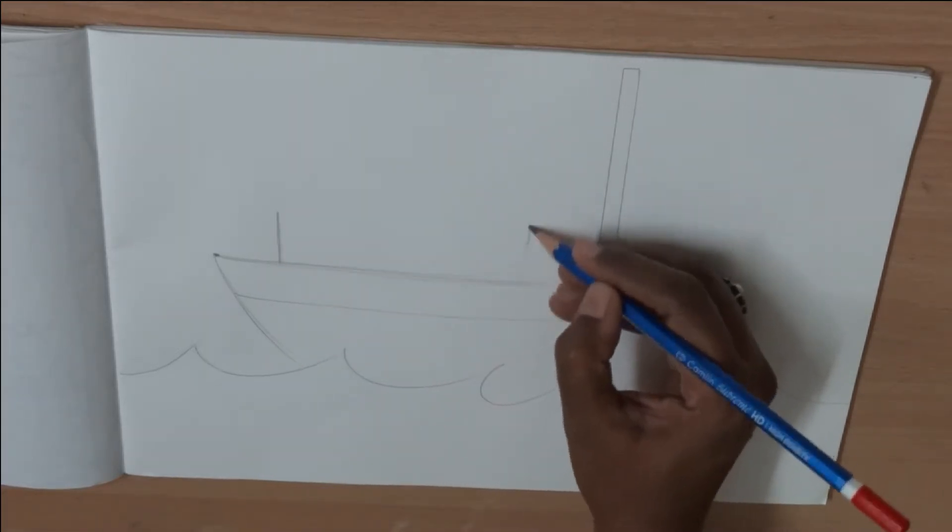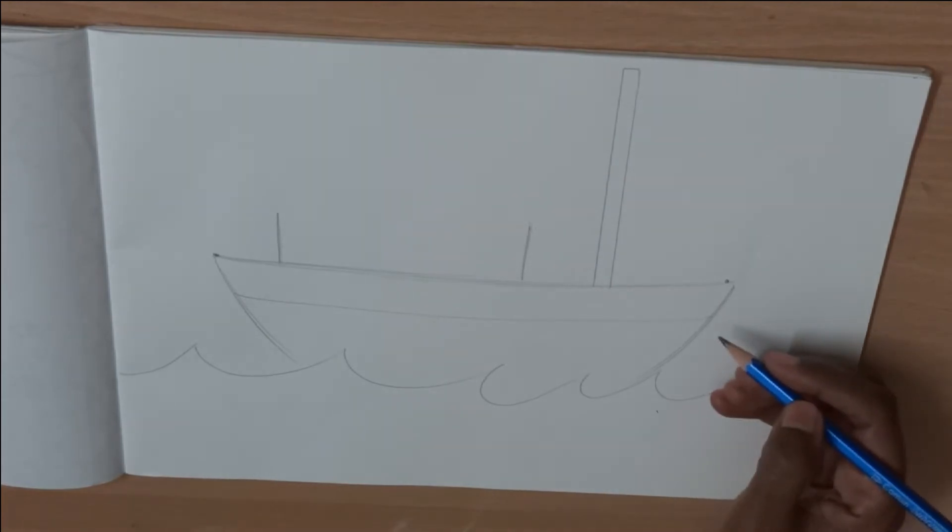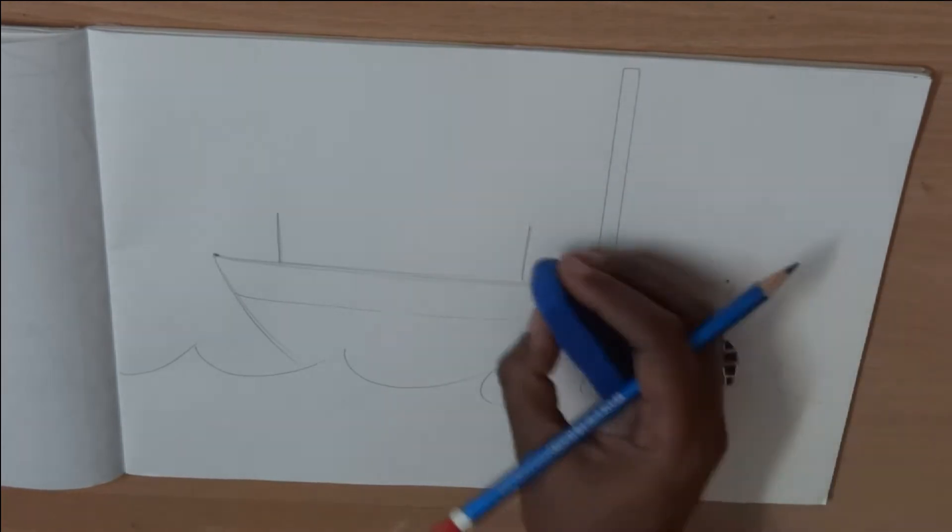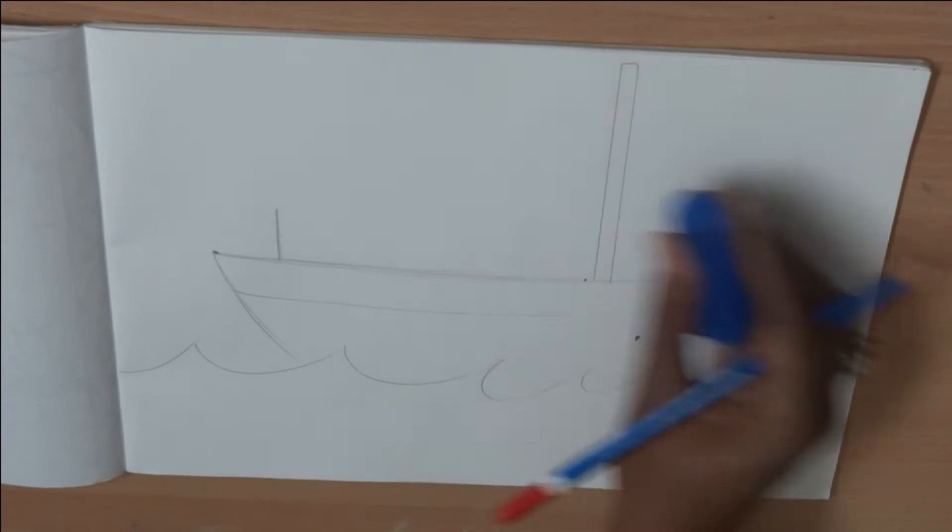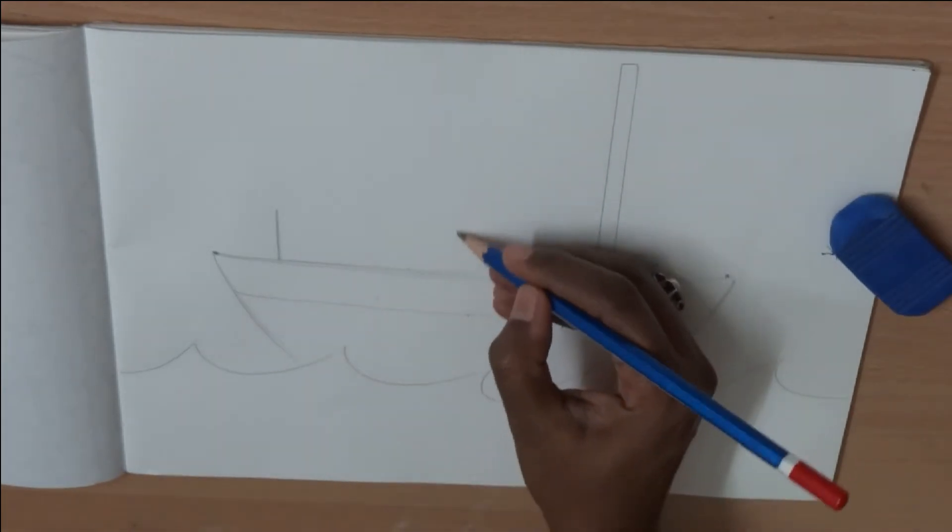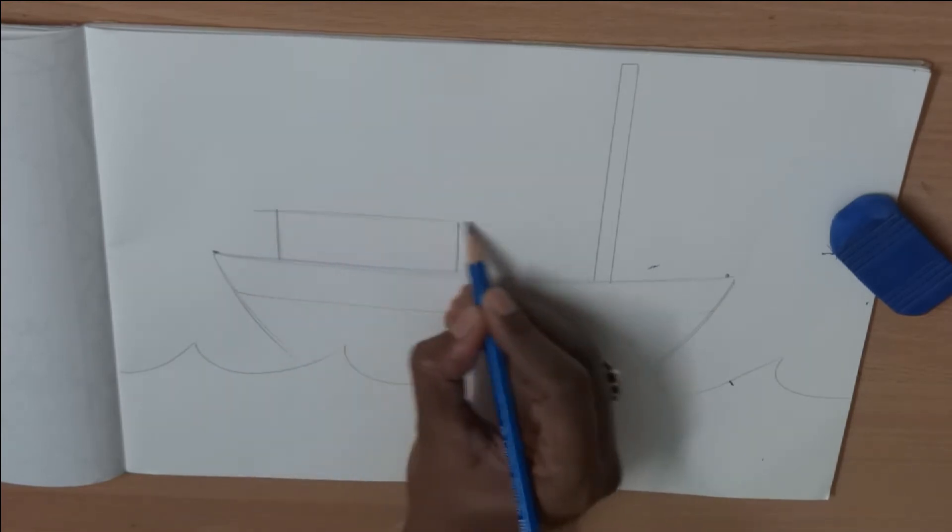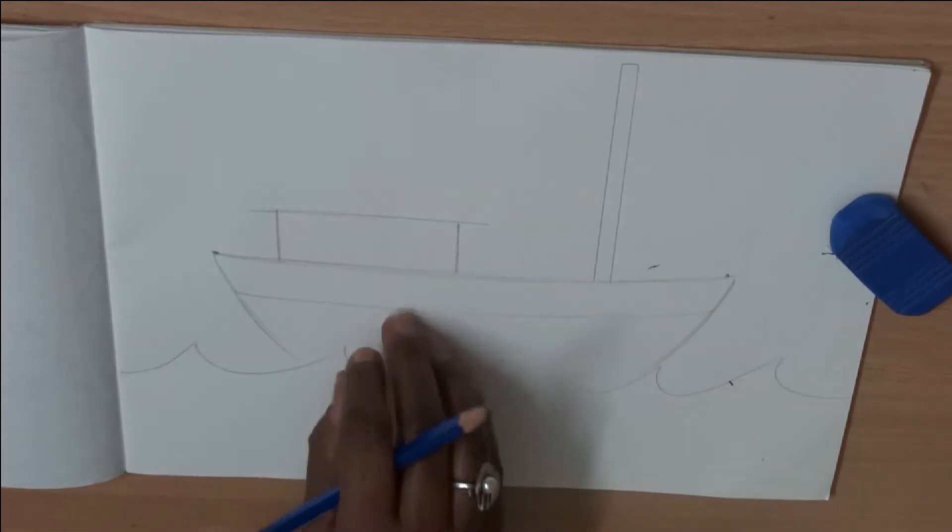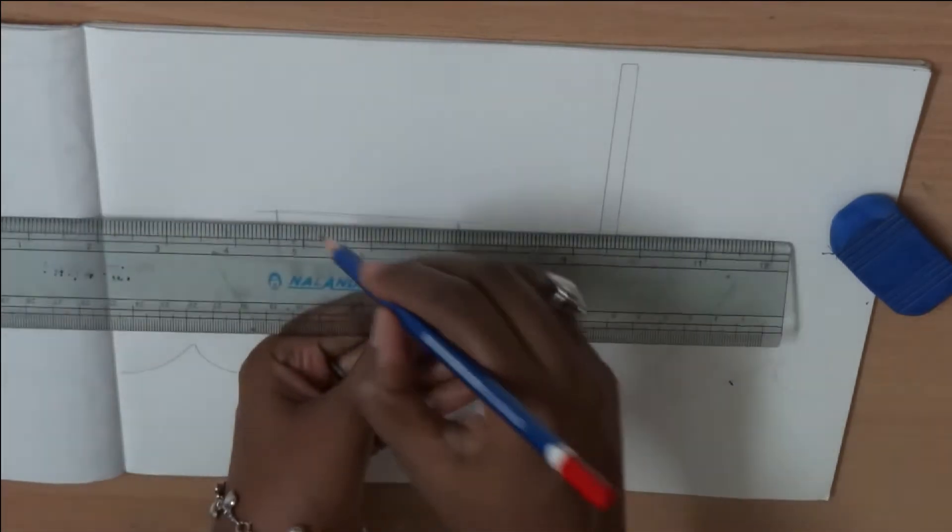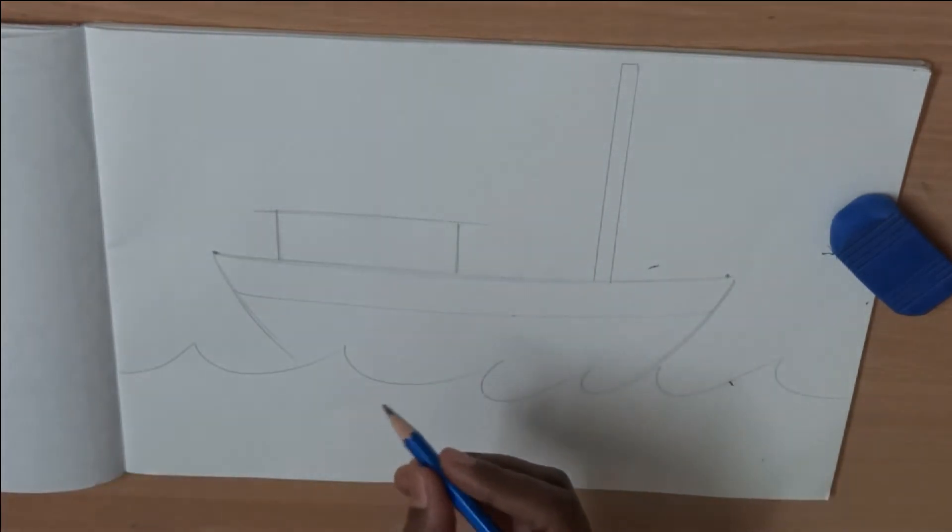Now we are going to draw a house. I feel this house is a little big. Now let's erase that and make it a little small so that we will have space for the sail. You all know how to draw a house. Two standing lines, one sleeping line. You may use your scale.